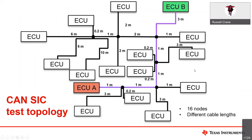We're going to give you a brief demonstration of what CAN signal improvement capability looks like. We have here a star topology — the topology that the CAN in Automation organization utilizes for its compatibility testing for CAN-SIC. This is 16 nodes with different cable link lengths. We'll send a CAN-FD packet at 2 megabits per second, then a CAN-SIC packet at 2 megabits per second, and also show you the same traffic at 5 megabits per second.